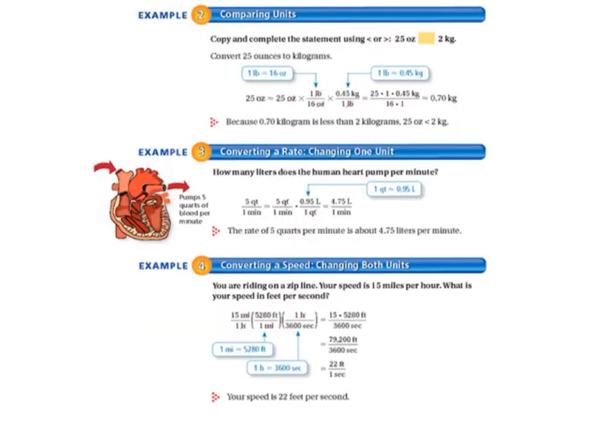Now we're going to look at example 2. This is on page 235. Copy and complete the statement using less than or greater than. 25 ounces is either less than or greater than 2 kilograms. So we need to compare it to kilograms.